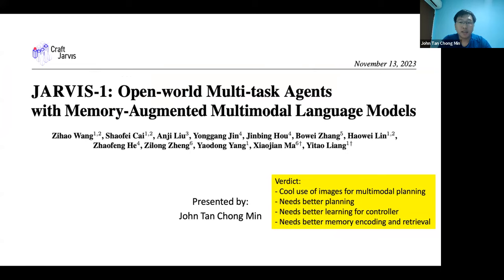I feel that JARVIS-1 is very cool because they use image input. As you already know, image input is very high dimensional - a lot of pixels. Each pixel has 256 colors in red, green, and blue; some even count transparency. So the input space for images is huge. How exactly are they going to process this input space? The previous versions of large language models solving Minecraft crafted everything in text, which is a much more manageable space. How then does JARVIS-1 use images for planning?